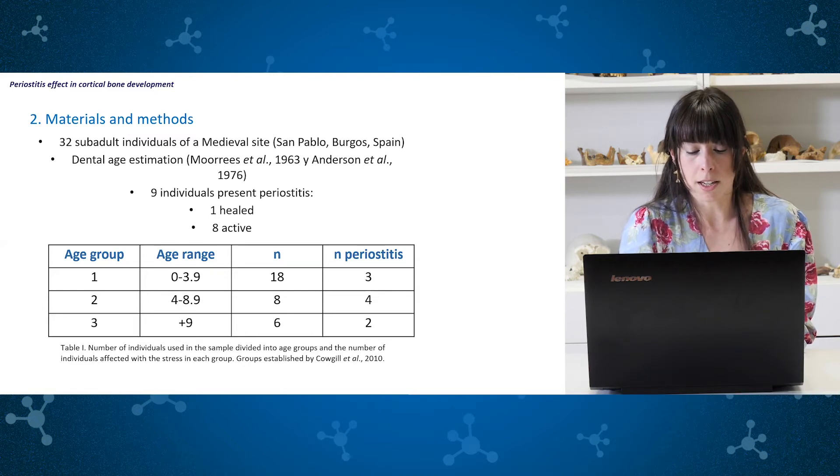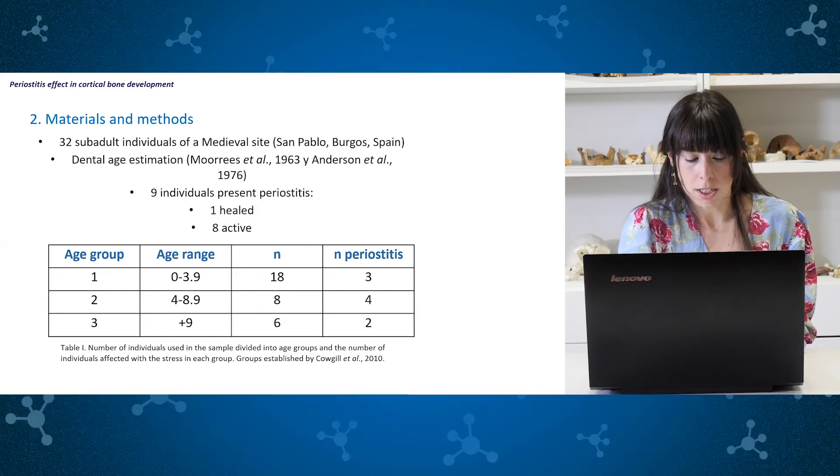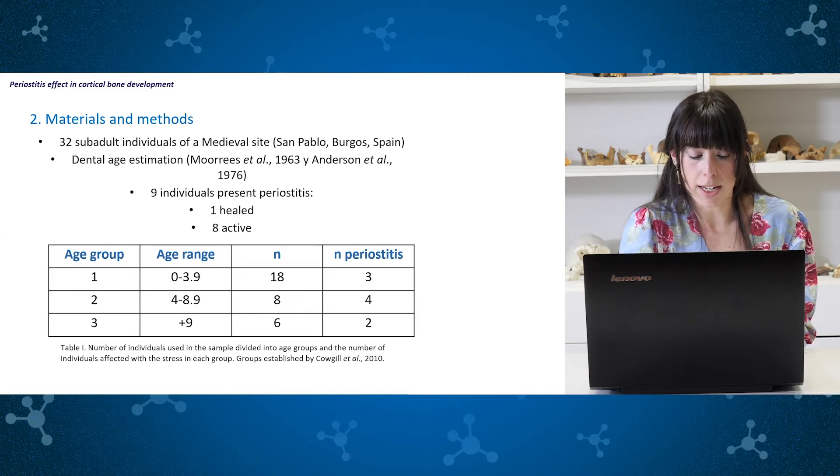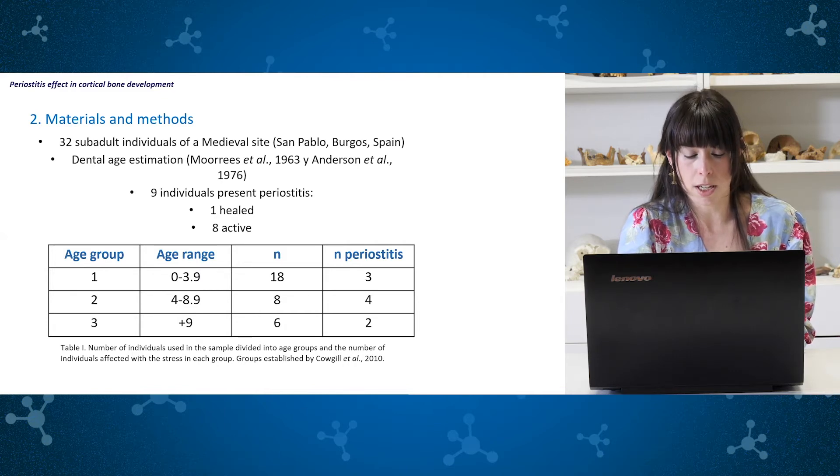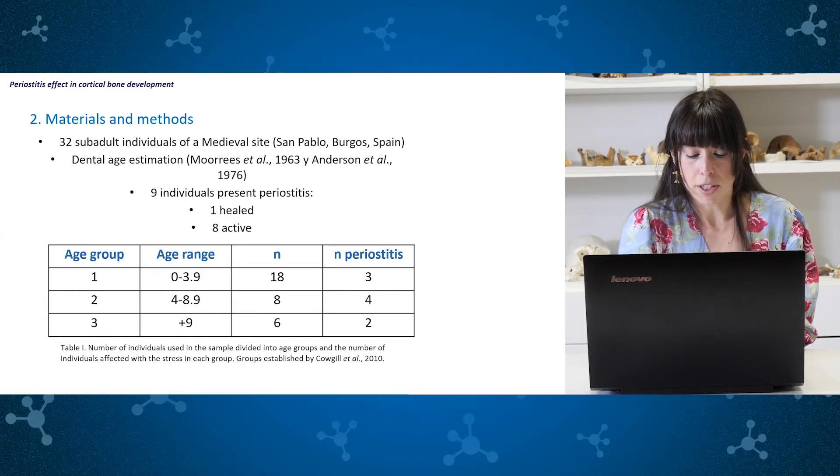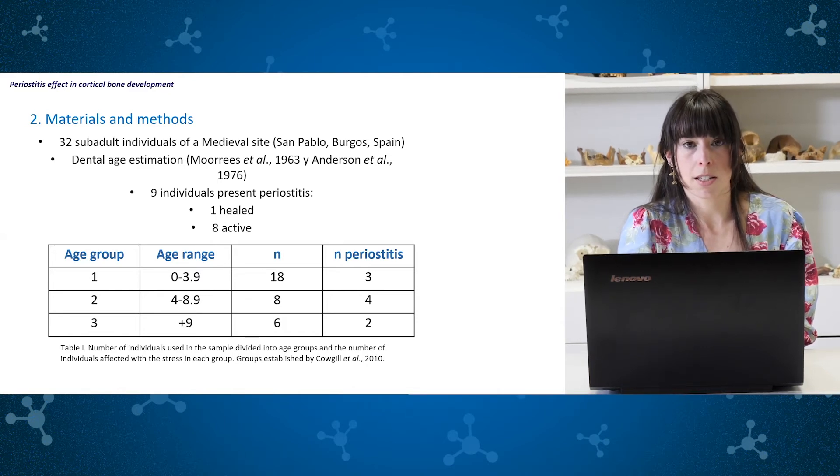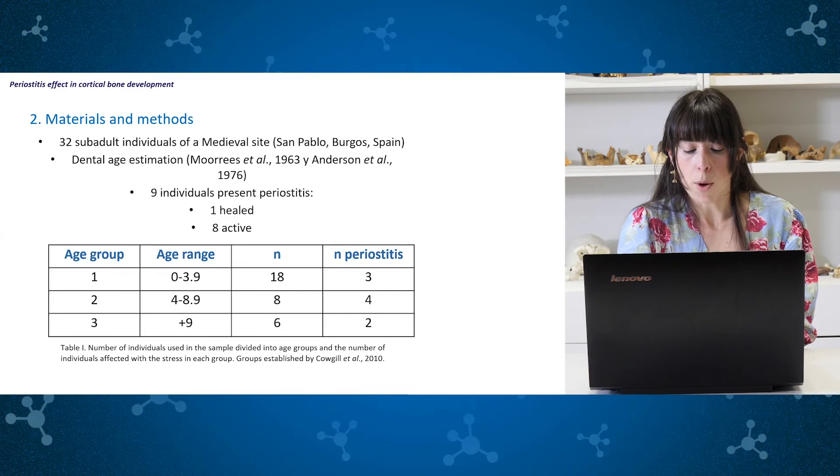All of them were divided in three age groups. First of them from neonatal to four years old, the second group has a range from four to nine years old and the last one includes the rest of individuals from nine to 16 years old. This division has been established in terms of the analysis of the growth ratio forces made by Coggale and colleagues in 2010. It can be seen in the table the number of individuals in each group and the number of them that present periostitis. Eight of them present the stress in its active form and one of them presents it healed or healing.